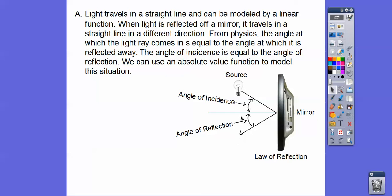From physics, this angle right here, which becomes the angle of incidence, is equal to this angle right here. And so we can use these absolute value functions to solve some equations. And it's just called the law of reflection in physics.